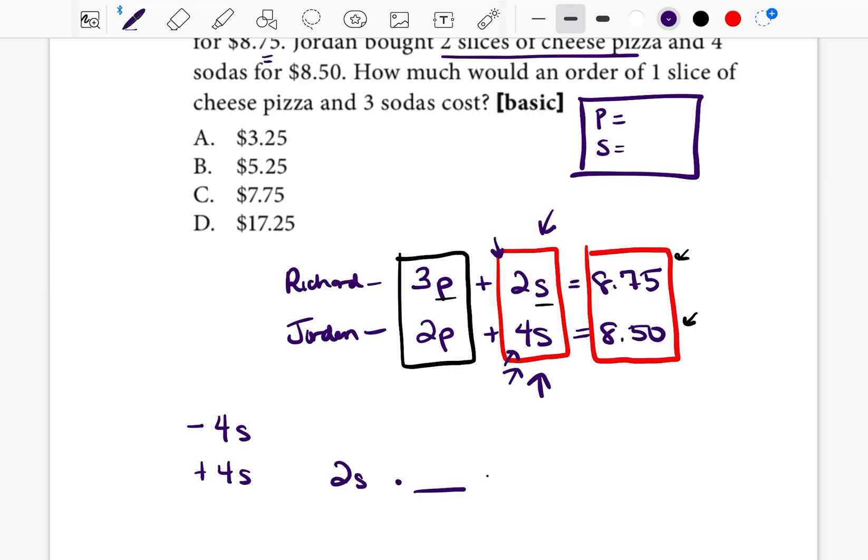What do I have to do in order to get positive 2S to negative 4S? Well, 2S times negative 2 would equal negative 4S. So that must mean that I have to multiply the entire top equation by negative 2 in order to get negative 4S in that box. So let's go ahead and do that.